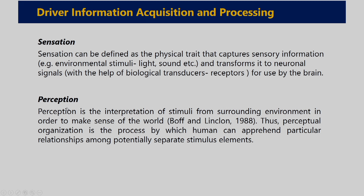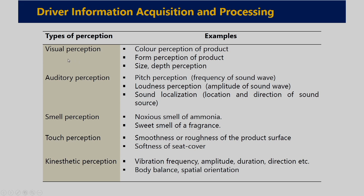Next is perception. Perception is the interaction of stimuli from the surrounding environment in order to make sense of the world. Perceptual organization is the process by which humans can apprehend particular relationships among potentially separate stimuli. Through sensation, information reaches the brain where perceptual processors help in discriminating the type of information, its intensity, and its magnitude. Various types of visual perception include colour perception, form perception of a product, and size and depth perception.